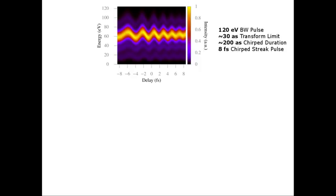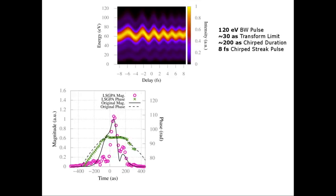The spectrogram from a 200 attosecond chirped EUV pulse with a bandwidth of 120 eV was simulated. At these bandwidths, the error resulting from the central momentum approximation and removal of the dipole transition matrix element prevent the LSGPA from accurately retrieving the EUV pulse profile and phase.